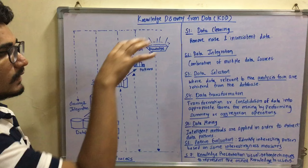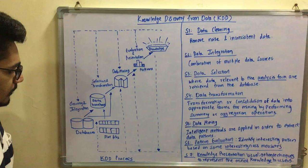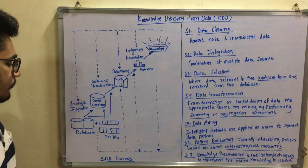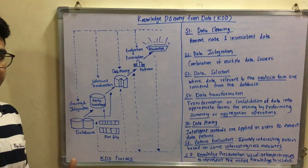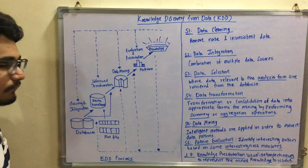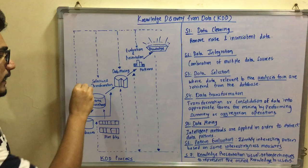Let us understand what this diagram is. This is the KDD process. At the base level you have different databases — in table format you have SQL, PL/SQL, or other Oracle forms. Then you have flat files. All these go to the data warehouse where data from different kinds of sources are stored.